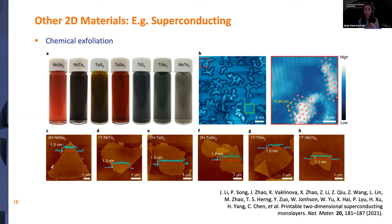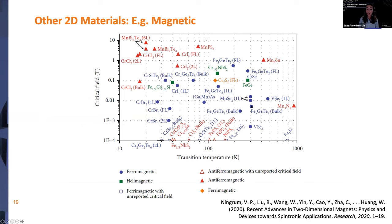Beyond the most well-studied materials, there are other exciting material types. One is superconducting 2D materials, where researchers have looked at various superconducting flakes. Another very exciting class is magnetic 2D materials — five years ago we would have said there were none, but now many are predicted and some have been made. These include antiferromagnetic, ferromagnetic, and other types, plotted versus their critical field and transition temperature from magnetic to non-magnetic.